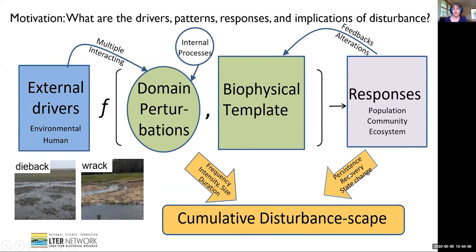As opposed to a resilient system that's persistent, you can recover from a disturbance, or you can have a stage shift. What we're really interested in is synthesizing this across the entire landscape, and so we're calling this a cumulative disturbance scape.